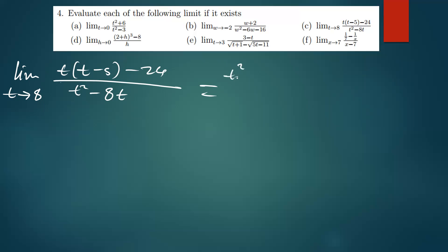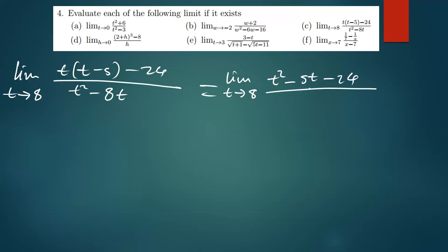So we have the limit as t approaches 8. T times t on top gives t squared, then negative 5 times t gives negative 5t, then we have negative 24. For the denominator, we can write t(t minus 8). Now let us see how we can simplify the numerator by factorization.